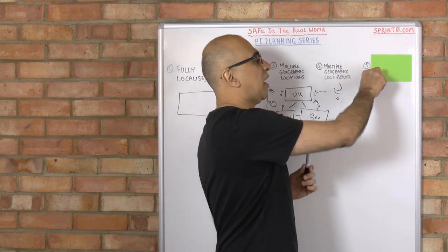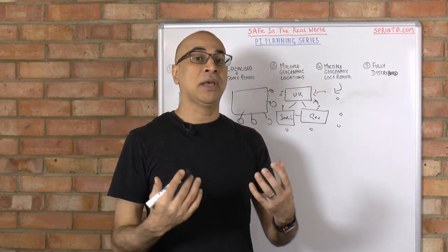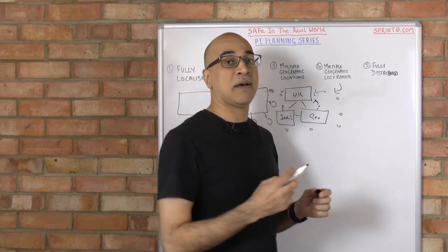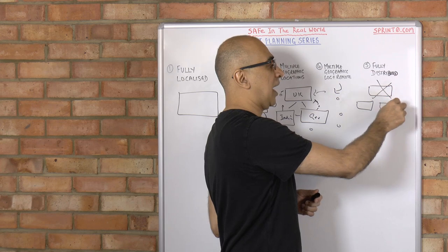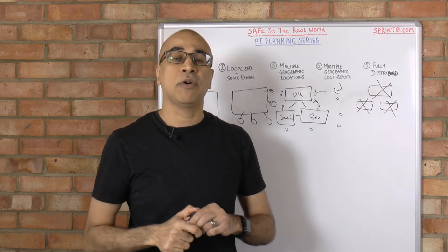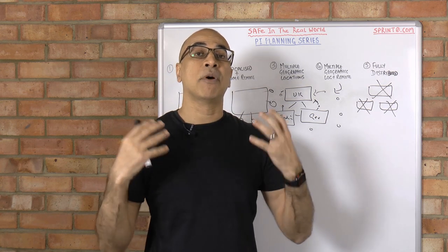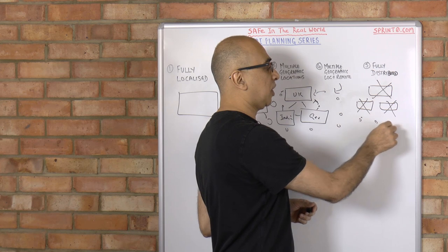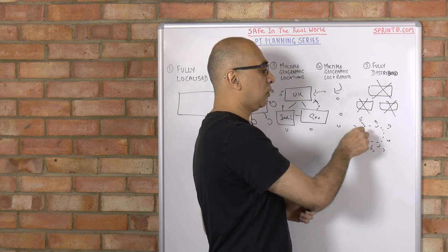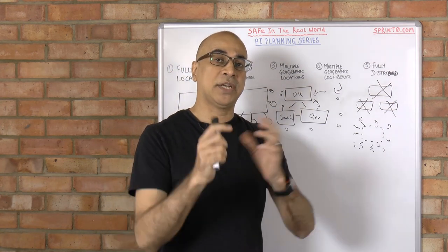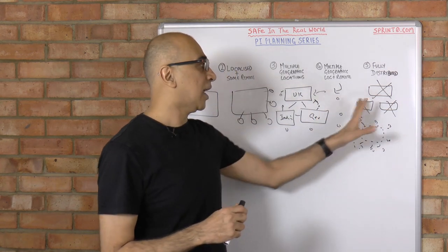Finally — and this is very topical at the moment with the coronavirus — you have the fully distributed PI Planning event. This is where you don't have any large location where people are getting together at all. You have a group of everybody, up to 150 people, all dialing in — essentially a fully remote event. You may also have different sections and groups of people dialing into different dialing groups, and in that way you have a fully distributed team.